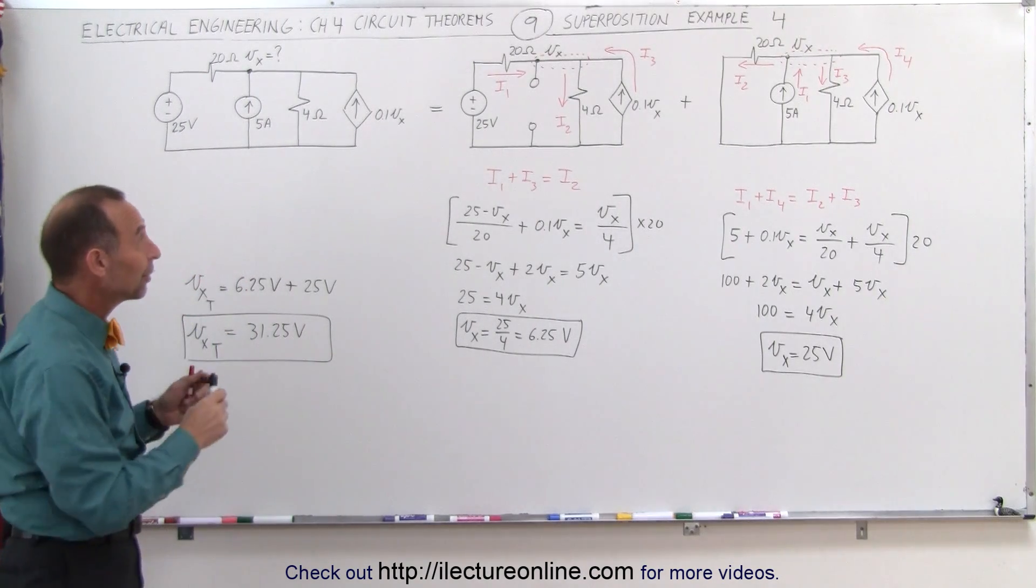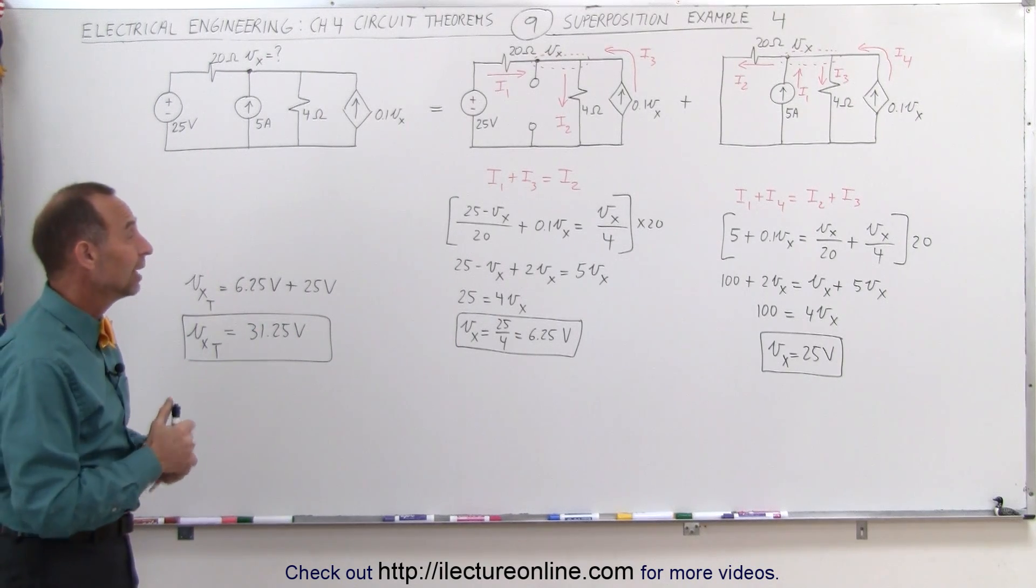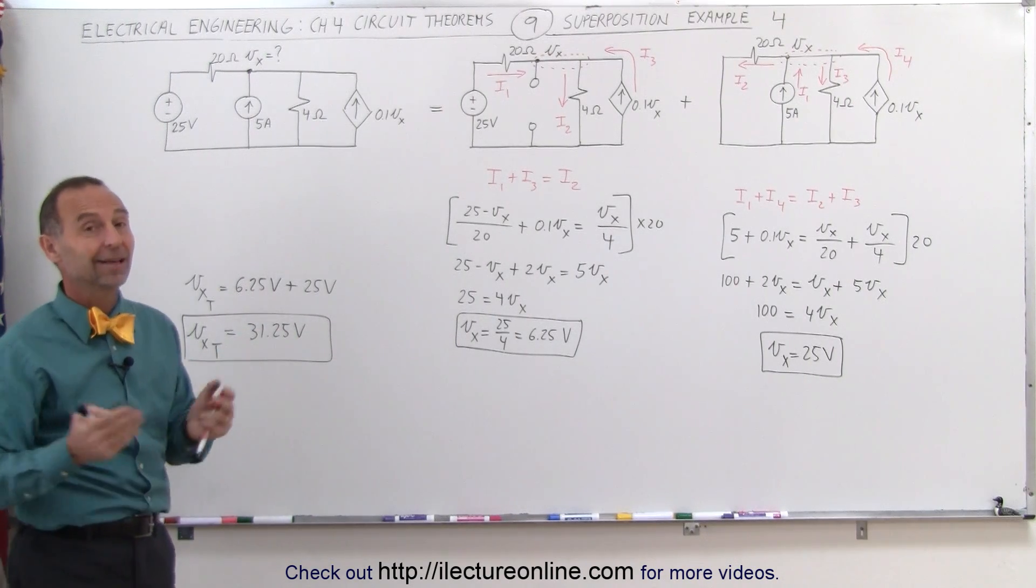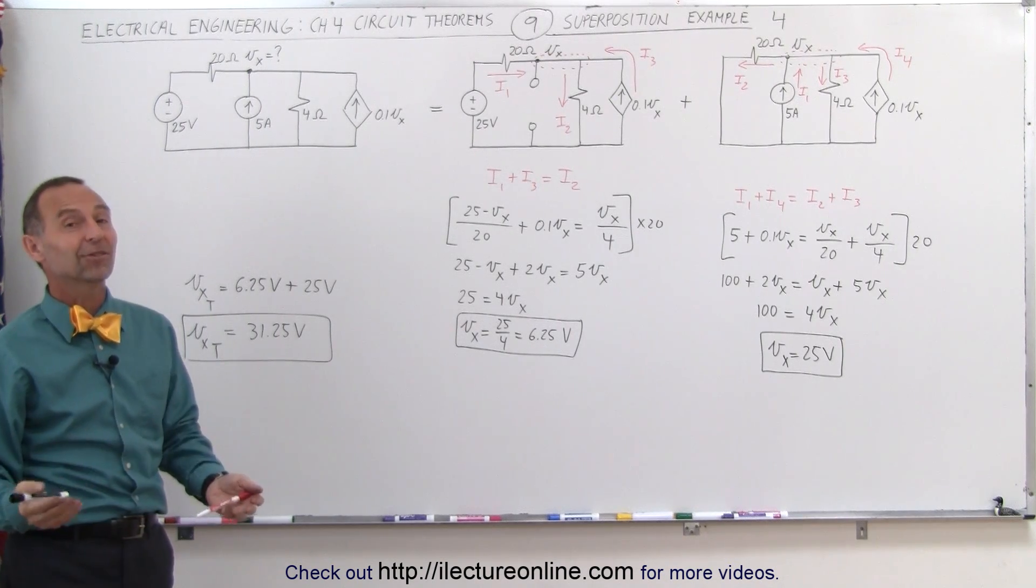And in this case, I would say separating the circuit into two separate circuits and solving those individually, and then adding it together algebraically, seemed to be the easiest way to do this particular problem. And that's how it's done.